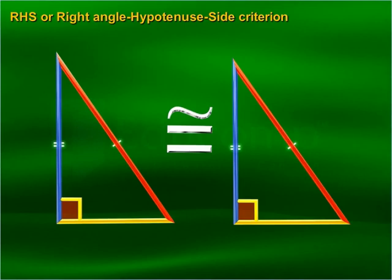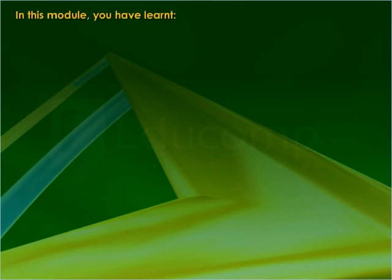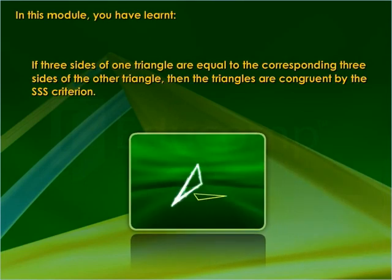RHS, or Right angle-Hypotenuse-Side criterion: if in two right triangles the hypotenuse and one side of one triangle are equal to the hypotenuse and the corresponding side of the other triangle, then the triangles are congruent.